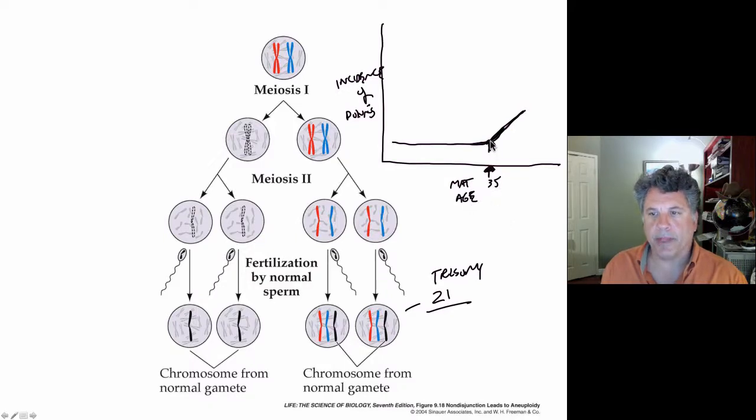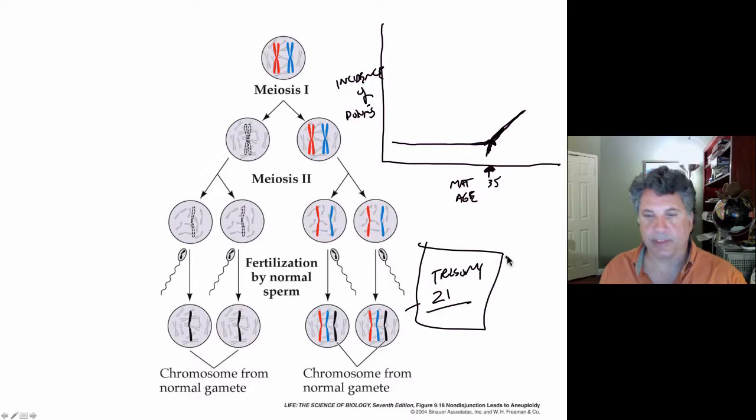So the karyotypes of the fetus could be obtained by amniocentesis or by chorionic villi sampling, which can occur at a much earlier stage. And again, a karyotype can be obtained looking for trisomy of chromosome 21.